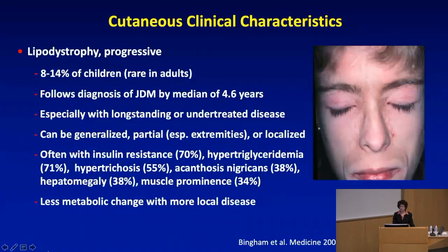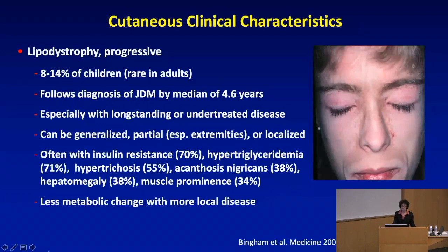Lipodystrophy can be progressive. It's rare in adults but has been seen in 8% to 14% of children, following the diagnosis of JDM by a mean of about five years — another sign of chronicity from longstanding untreated disease. It's variable in extent: it can be generalized, partial especially involving the extremities, or localized. It's often associated with metabolic abnormalities, especially insulin resistance and hypertriglyceridemia.